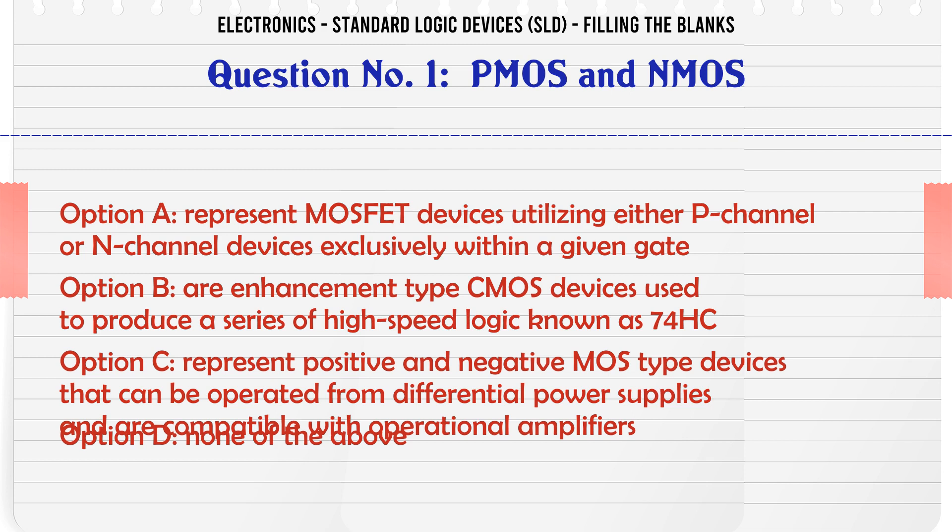B are enhancement type MOS devices used to produce a series of high-speed logic known as 74HC. C represent positive and negative MOS type devices that can be operated from differential power supplies and are compatible with operational amplifiers. D none of the above.